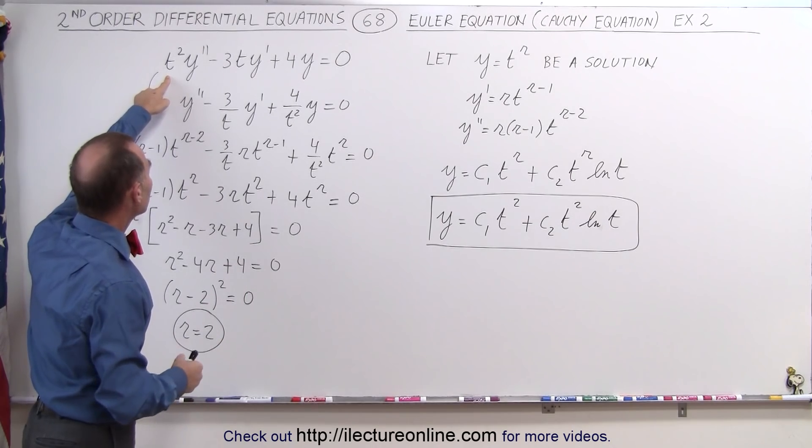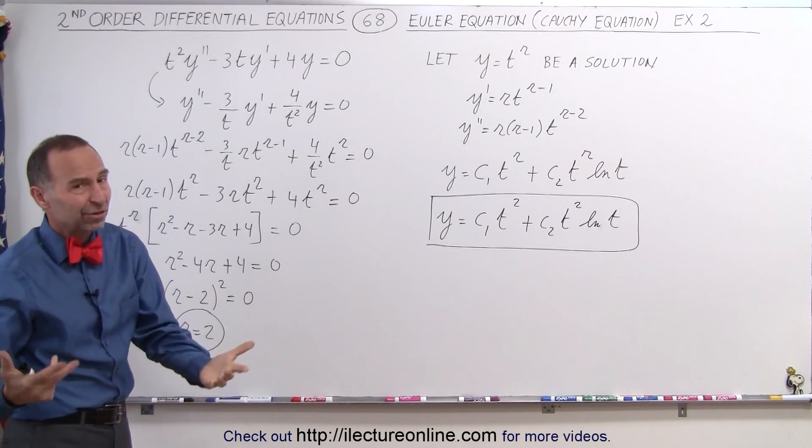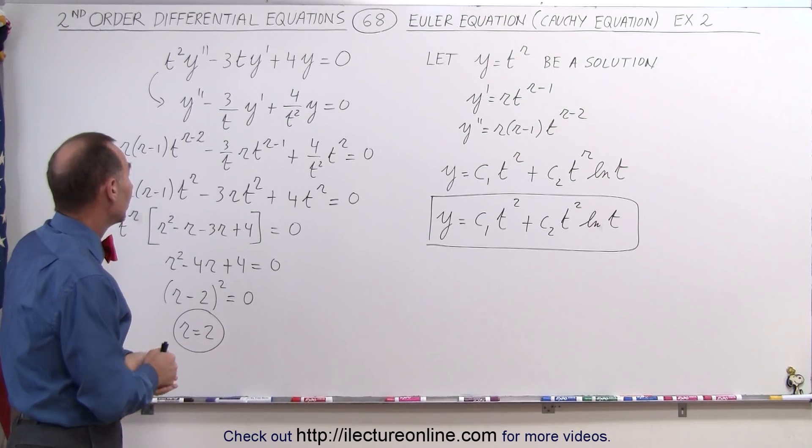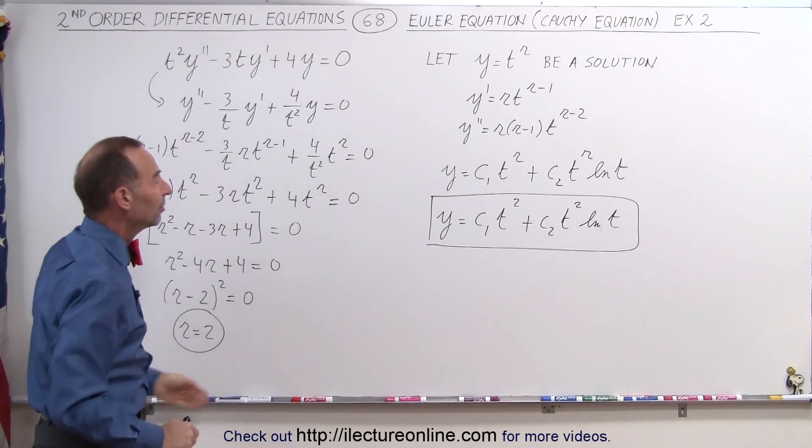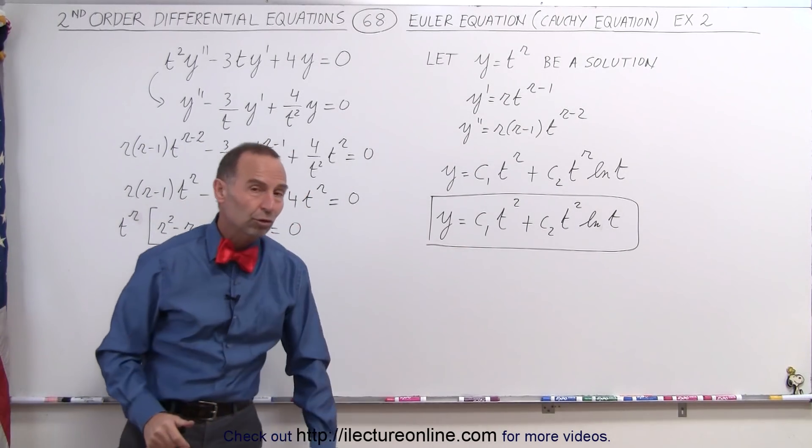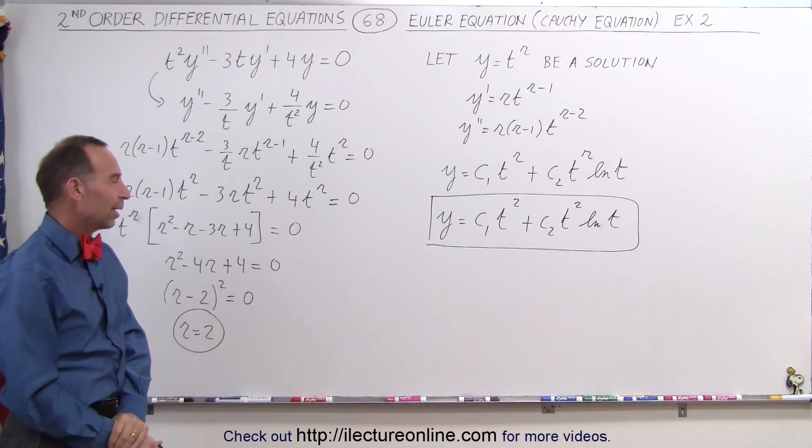Typically we use x's or t's. t stands for time, x stands for distance, depending upon the type of problem we're dealing with. But if we have a double root like this, then this will be the general solution to that equation. And that's how it's done.